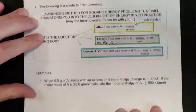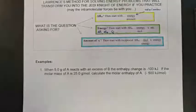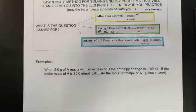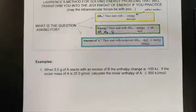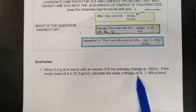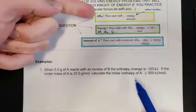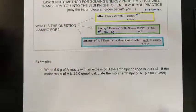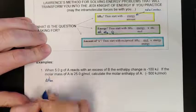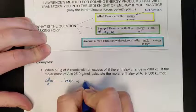Here's the first example: when 5 grams of substance A reacts with an excess of substance B, the enthalpy change is negative 100 kilojoules — released, because of the negative sign indicating exothermic. The molar mass of substance A is 25 grams per mole. Calculate the molar enthalpy of A. Since we're looking for molar enthalpy, we start with energy over amount.